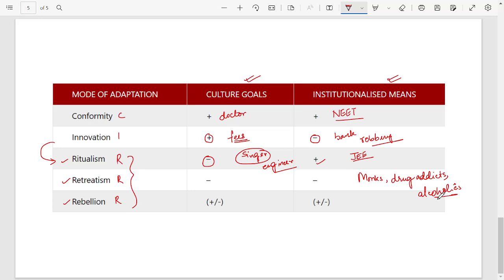Next we come to a very important mode of adaptation which is called rebellion. Rebellion is very important for us to remember because many times in exams you will be given 'no goals no means' - this option is wrong. No goals no means is not rebellion. In rebellion we create new goals and new ways also to achieve them.